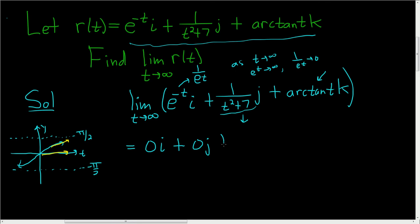So this will be plus pi over 2 k. So this is equal to pi over 2 k. And that's an acceptable answer. If you wanted to write it in vector form, this would be 0, 0, pi over 2. And that is the final answer. I hope this helps.